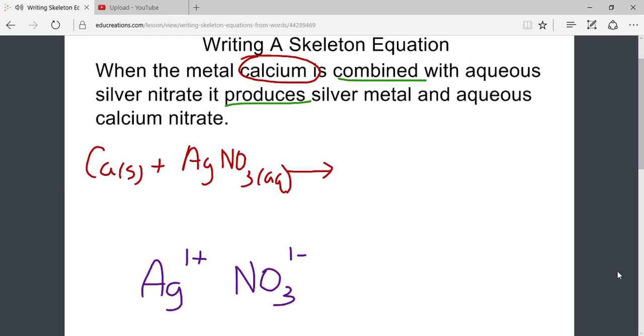Now let us look at the products. It describes one of the products as silver, the metal silver. Therefore, silver, the symbols for the element silver, Ag, would be used. And again, since it is a metal, typically most metals are solid.